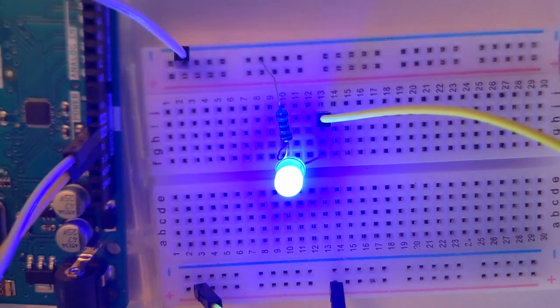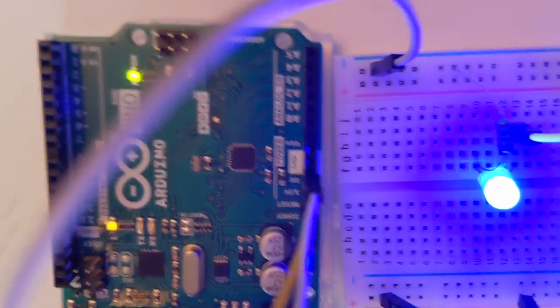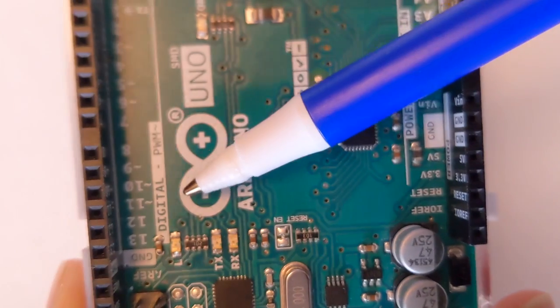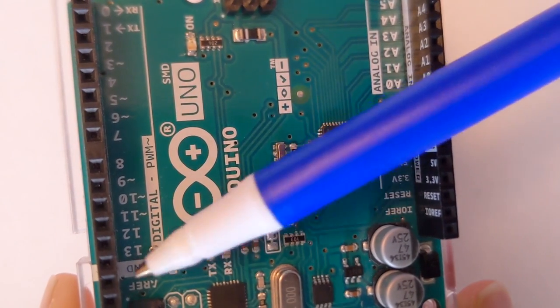The next step is to rewire this so that I can actually control this LED. Remember, our goal is to make the LED blink. Right now it's on but I won't be able to control it because the LED is not connected to one of the digital pins.